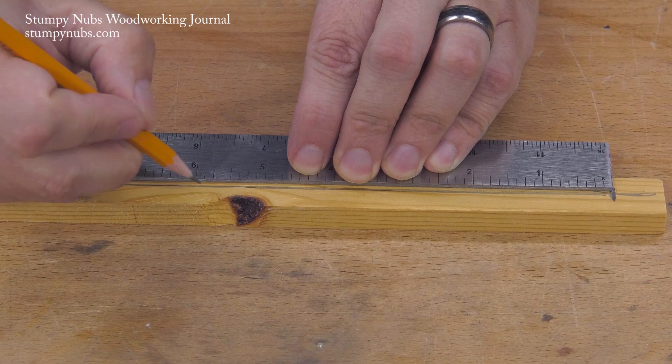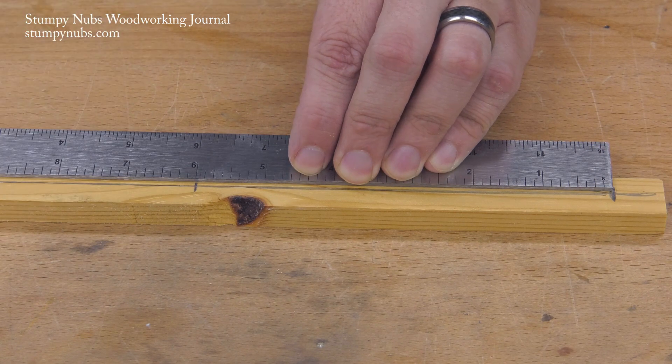Now, let's say I want my ellipse to be 12 inches tall, so I'm going to measure half that distance, six inches, from my first mark.